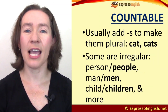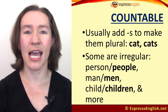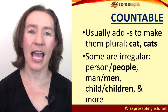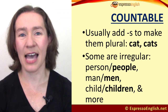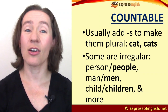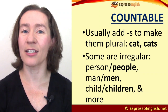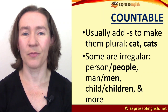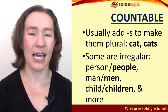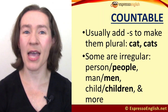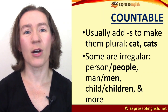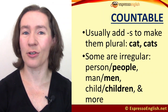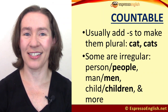With most countable nouns, we add S to make them plural — cat, cats. But there are some irregular plural nouns like person, people; one man, two men; one child, ten children; and others.